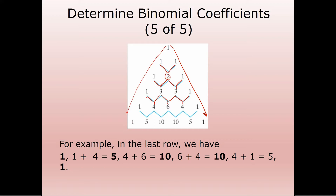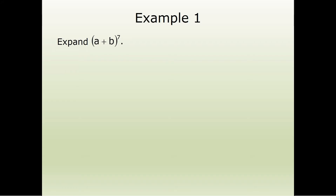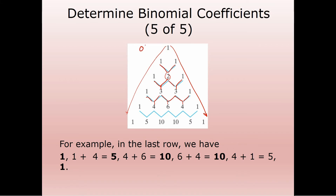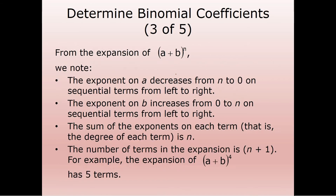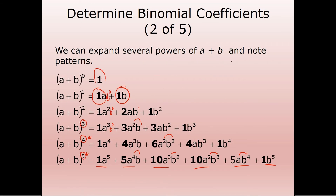Can we use all of this information to expand something? Absolutely. If we're talking about to the seventh power, we need eight rows of Pascal's triangle. This is for the zero power, first power, second power, third power, fourth power, fifth power. Notice the coefficients match Pascal's triangle exactly: one, one, one; one, two, one; one, three, three, one; one, four, six, four, one. That entry in Pascal's triangle gives the coefficient.